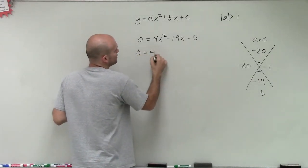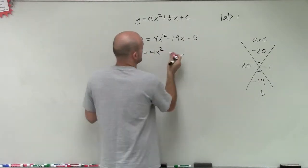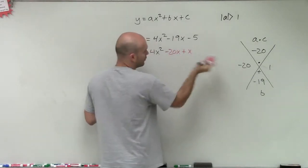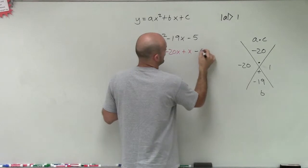So now I have 0 equals 4x squared minus 20x plus x, or 1x, minus 5.